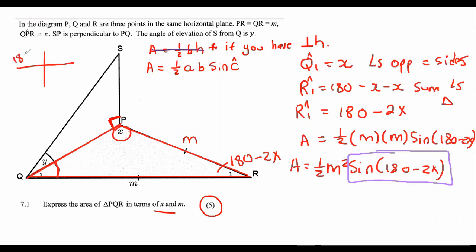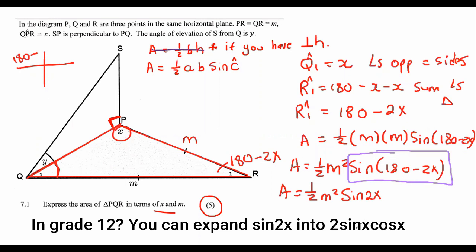You know, on the CAST diagram, you get 180 minus. So, what that will turn into is it's just going to be a half M squared sin of 2X. Half M squared sin of 2X.